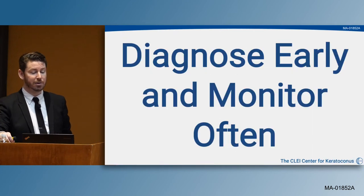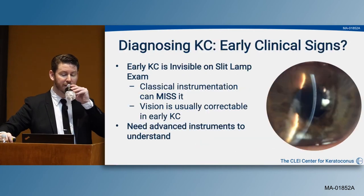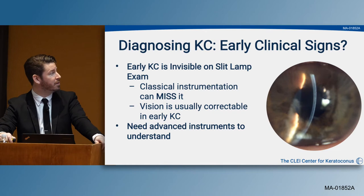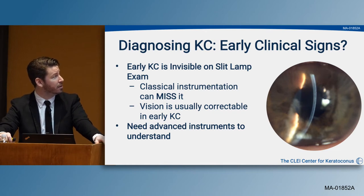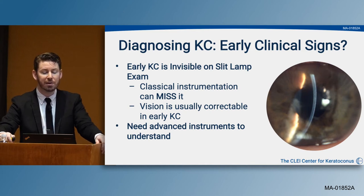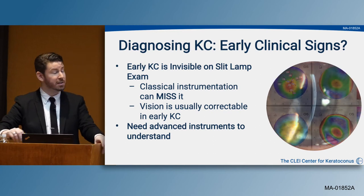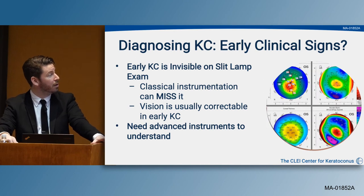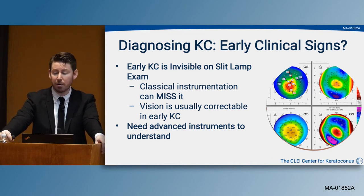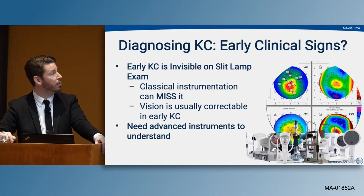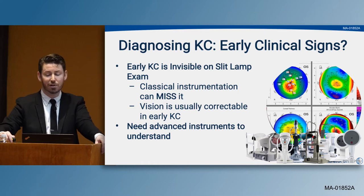Early keratoconus is invisible on slit lamp exam—it's easy to miss, and vision is usually very correctable in early keratoconus. We really need advanced diagnostic instruments to find those early findings. The corneal tomography of the individual shown on slit lamp reveals early keratoconic signs with absent slit lamp findings, emphasizing the need to use diagnostic equipment to diagnose early keratoconics as early as possible.